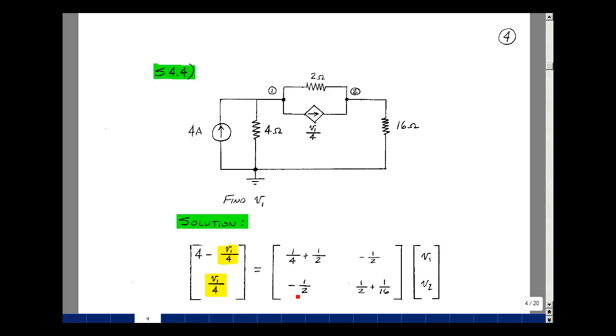So with two nodes I've got a 2 by 2 matrix, column 1 associated with V1, column 2 with V2. Left-hand side of the equation I've got two rows, one column, so it'll be a 2 by 1 vector. I'll be putting my current sources in this left-hand side of the equation.